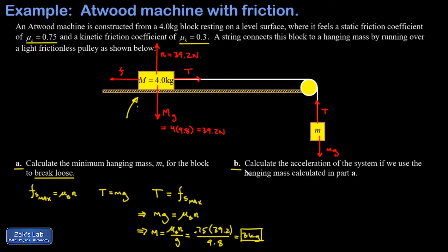In part b we want to get the acceleration of the system if we use the hanging mass that we calculated in part a. We're going to assume things have broken loose and begun to slide now. Even though that 3 kg is the maximum mass we can hang off without it breaking loose, even a billionth of a newton extra will break it loose. After that, the kinetic friction coefficient is way smaller than the static friction coefficient and this thing is going to slide and accelerate.